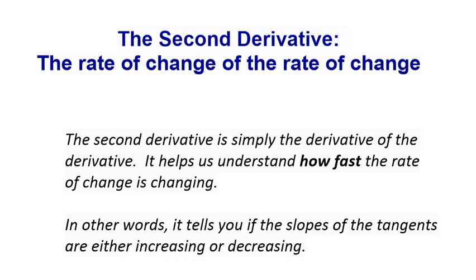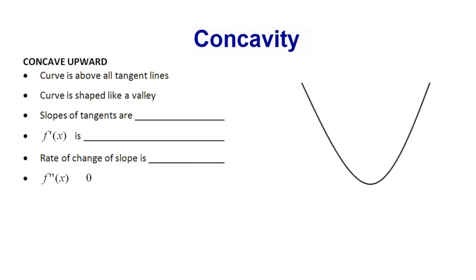The second derivative tells you if the slopes of the tangents are either increasing or decreasing. Let's start by looking at concave upward. If you see this graph on the screen, you notice that it looks like an upward-opening parabola. These two blue lines represent tangent lines, and the curve is above those tangent lines — the tangent lines are below the curve. It's shaped like a valley. The slopes are increasing.